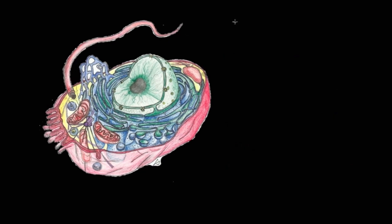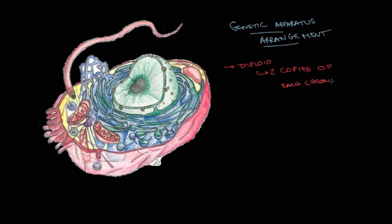To finalize this quick tutorial on eukaryotic cells, I want to go over the genetic apparatus of eukaryotic cells. So how it is arranged. And one thing that is important to mention is that in eukaryotes, we see diploid cells. We see some haploid, but usually when we talk about gametes. But in general, eukaryotic cells are diploid. And they have two copies of each chromosome. This is what diploid means. Two copies of each chromosome.